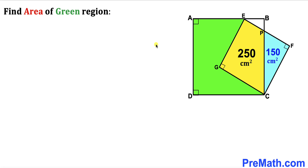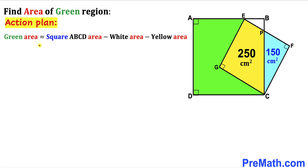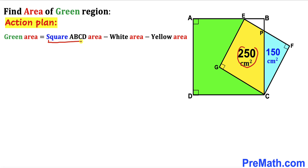Let's get started. Here's our action plan: the green area is equal to the area of square ABCD, minus the area of white triangle EBP, minus the area of the yellow shaded region. We have been given the yellow area, so our task is to calculate the area of square ABCD and the area of white triangle EBP.